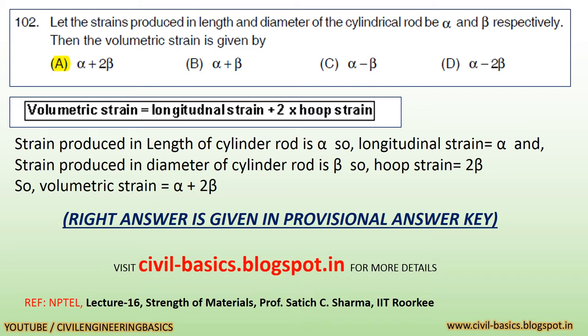So, hoop strain equals 2 times beta. Therefore, volumetric strain equals alpha plus 2 times beta. The right answer is given in the provisional answer key. Reference: NPTEL Lecture 16, Strength of Materials, by Professor Satish C. Sharma from IIT Roorkee.